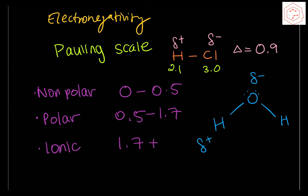Taking water as another example: hydrogen has a partial positive charge and oxygen has a partial negative charge, as determined from the electronegativity values in the table. Shared electrons spend more time near the oxygen nucleus because it is more electronegative. As a result, the oxygen atom gains a slightly negative partial charge and the hydrogen atoms become more positively charged.